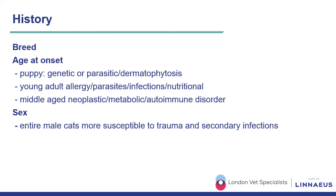In puppies, genetic and parasitic conditions should be considered first line, while in young adults the underlying conditions are most often allergic conditions, parasitic infections, or nutritional dermatosis. In middle-aged patients, neoplastic, metabolic, and autoimmune disorders usually become more prominent. Gender also plays an important role — for example, entire male cats are more susceptible to trauma and secondary infections.